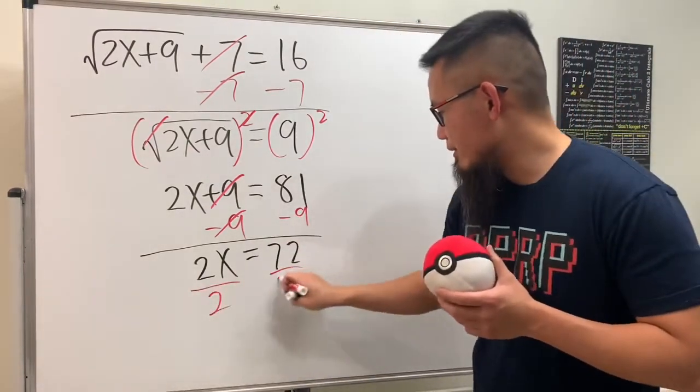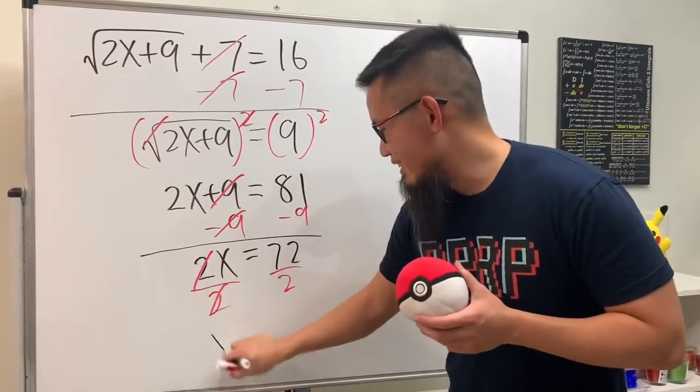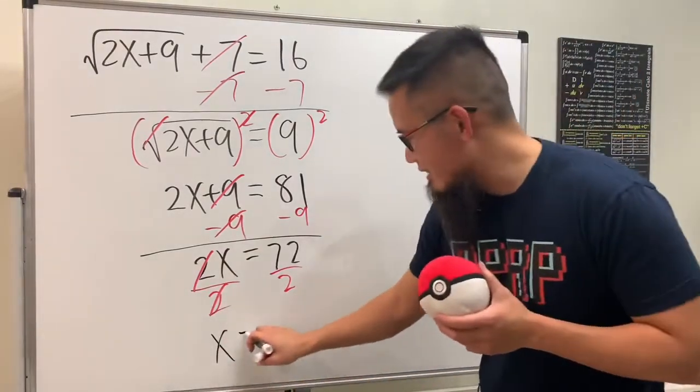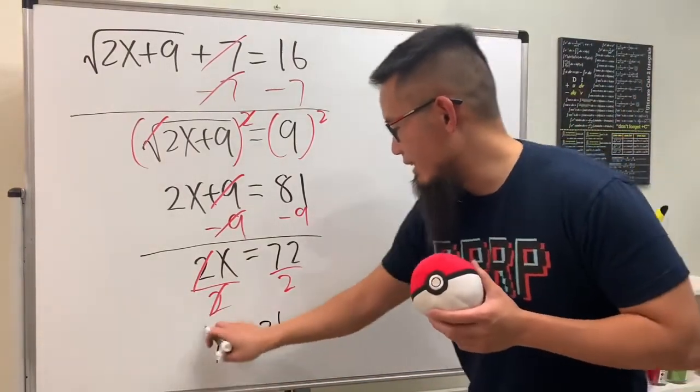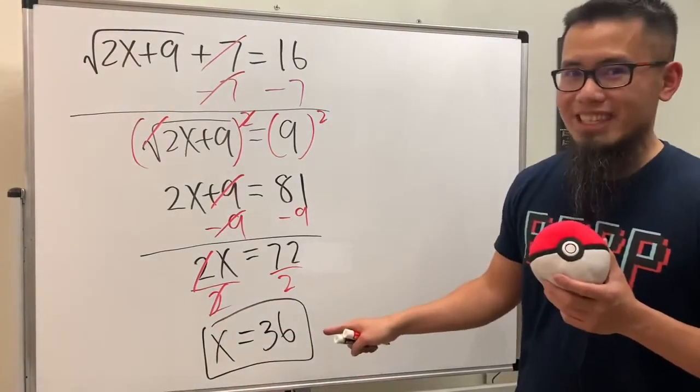And then just divide both sides by 2. So you see, final answer: x equals 36, and then we're done, just like that.